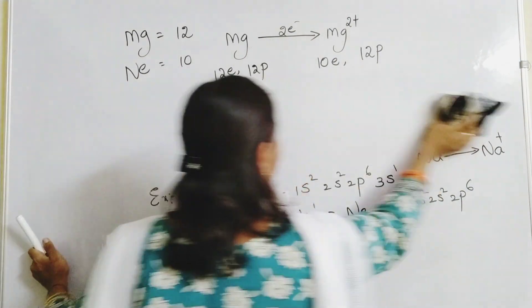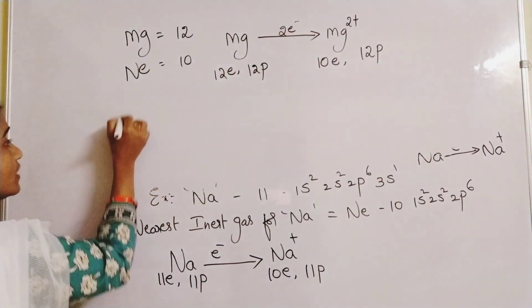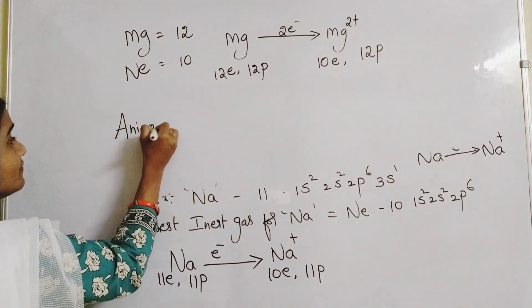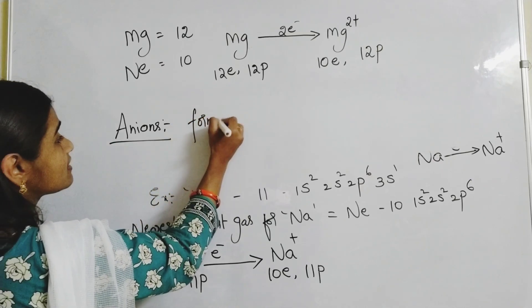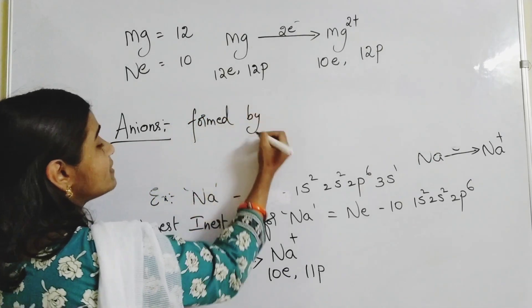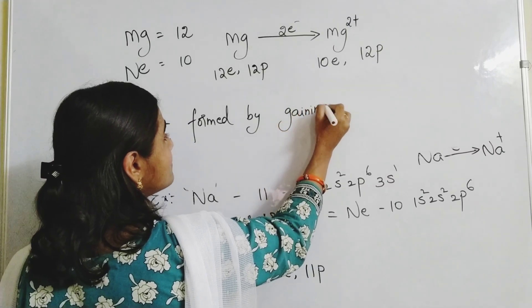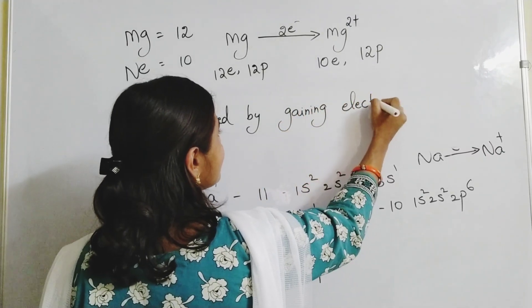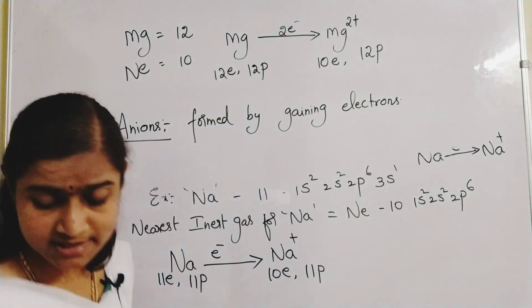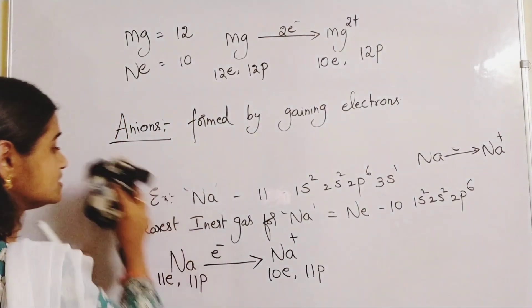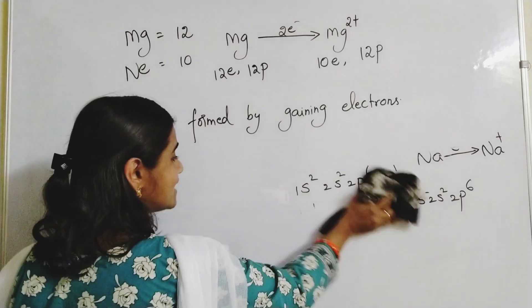Now if you go for anions — anions are formed by gaining electrons. Let us learn one or two examples.